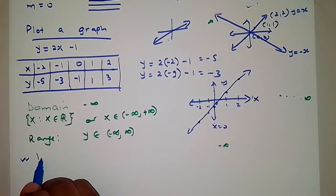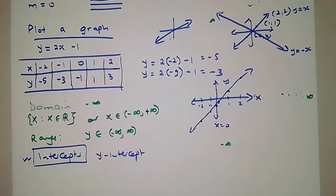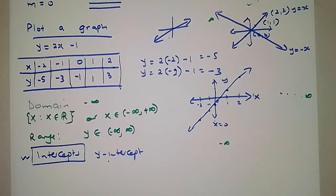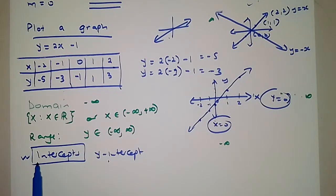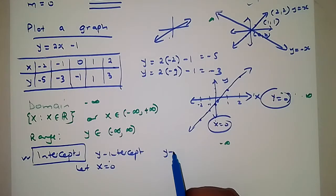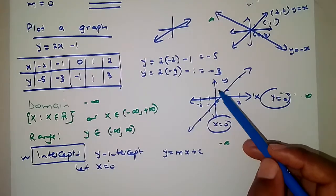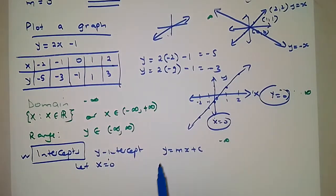When looking at graphs or functions in general, you will encounter things called intercepts. The y-intercept is the value where the graph cuts the y-axis. Remember: the equation of the y-axis is x = 0, and the equation of the x-axis is y = 0. To find the y-intercept, you let x = 0 in the function y = mx + c.